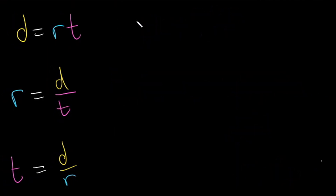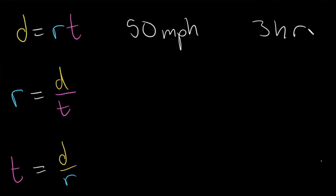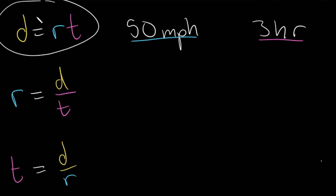Let's say a car drives at 50 miles per hour for 3 hours. How far did the car travel? Miles per hour is a distance unit divided by a time unit, so this is our rate — let's underline that in blue. And 3 hours — hours is a time unit, so that is our time. We have rate and time, so we need to solve for distance.